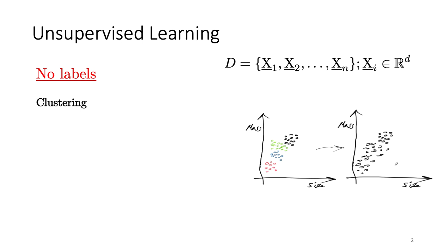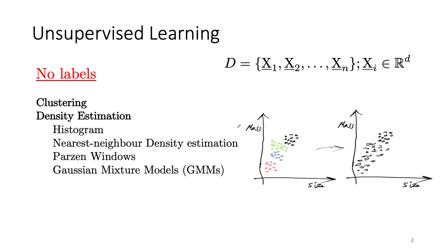There are so many methods in unsupervised learning. One of the most popular is clustering, which we're going to discuss today. For clustering, we'll talk about k-means clustering, which is an iterative process — pretty easy to understand and very popular. Next session we're going to talk about an extension using density estimation, which is the EM algorithm. We don't have time to discuss histograms, nearest neighbor, or Parzen windows, but next session we'll cover Gaussian Mixture Models (GMMs) and the EM algorithm.